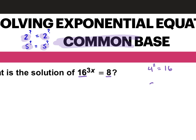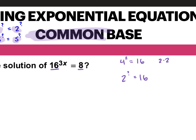How can I make 2 to some power equal 16? We have 2 times 2 is 4, times another 2 is 8, times another 2 is 16. So 2 to the 4th power is 16. And I'll leave the exponent 3x there — so I change 16 to be 2 to the 4th power. Now I want 8 to have the same base of 2. 2 to the 3rd power is 8.